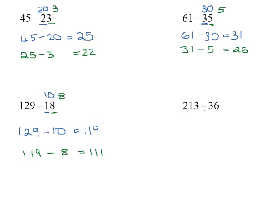Now this one, 213 subtract 36. The 3 represents 30 and the 6 is just in the ones column. So first of all, when I look at 213 subtract 30,